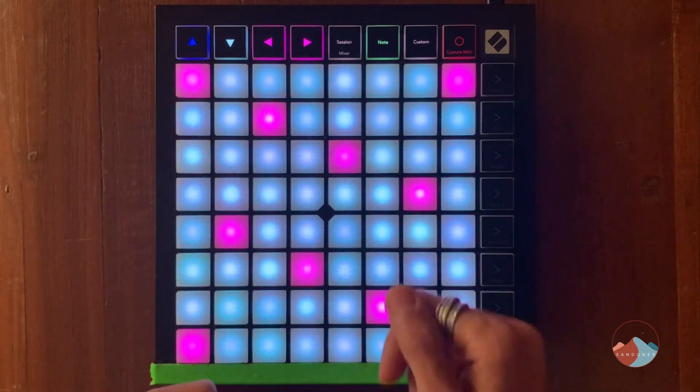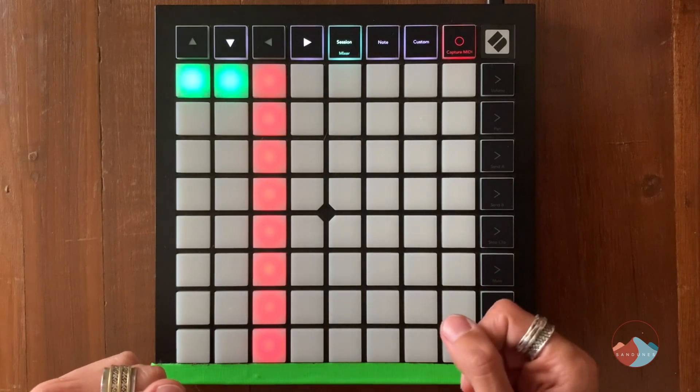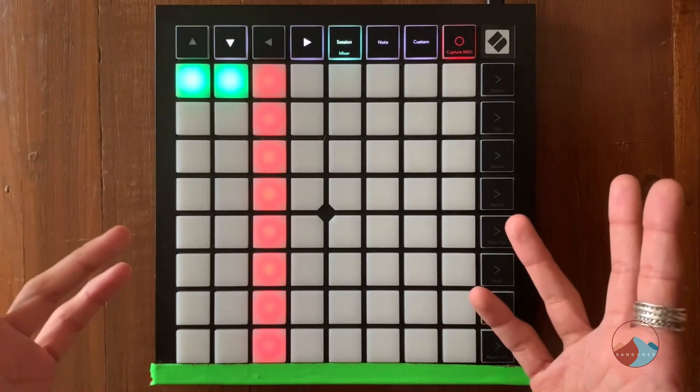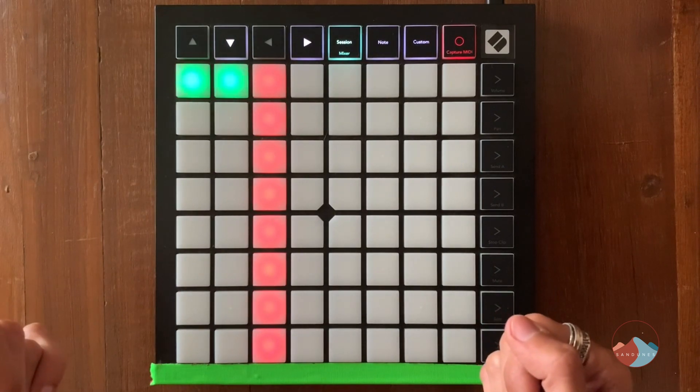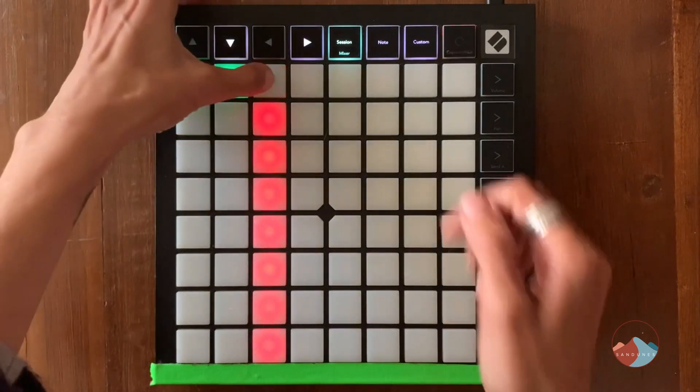Now that I'm happy with that sound, I'm going to go back to the session view, use the scene launch button to listen back to what I have so far. And I'm going to record a lead line, a melody or an arp over this loop. I trigger the clip, switch to note mode and then I can play it out.